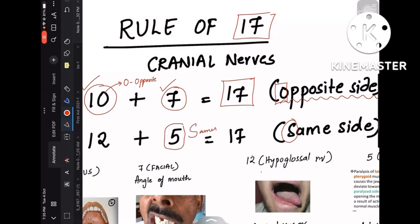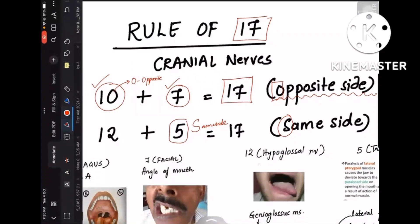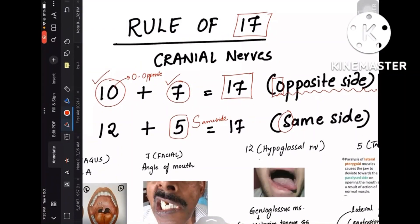Whereas 12 plus 5 is also 17. Here the deviation is towards the same side. Remember it like the '5' looking like 'S' — S for same side. So 10 plus 7 is 17 with deviation to the opposite side, whereas 12 plus 5 is 17 with deviation to the same side, affecting the hypoglossal and trigeminal nerves.